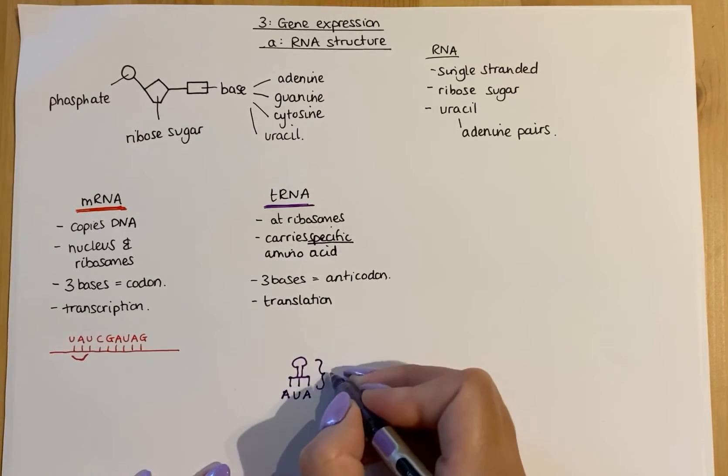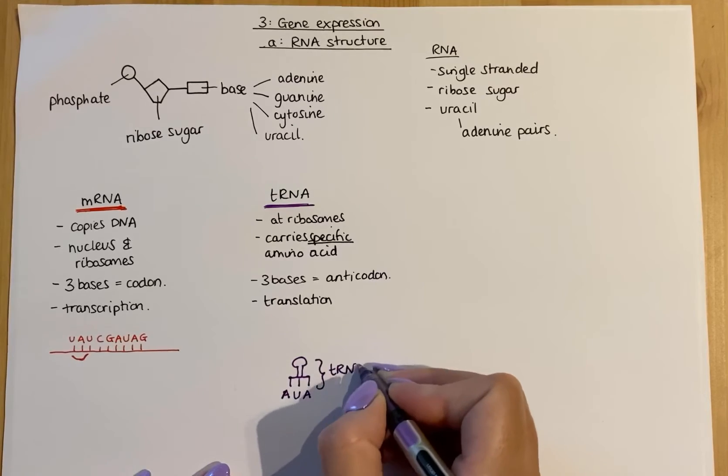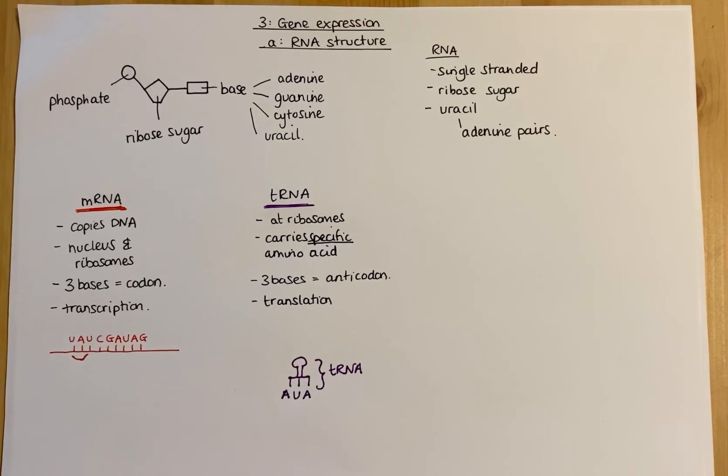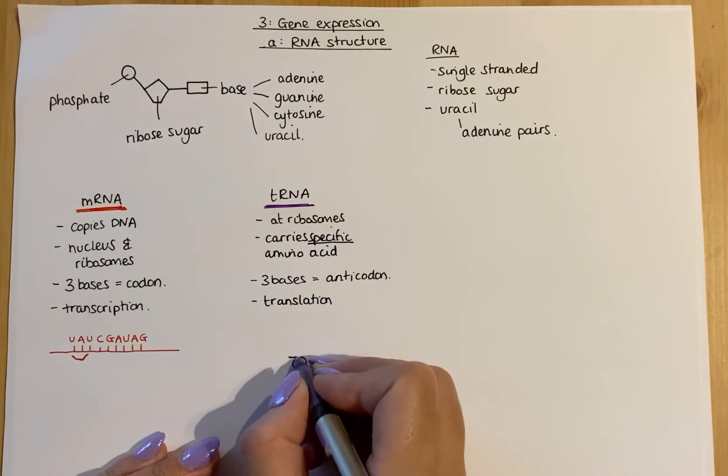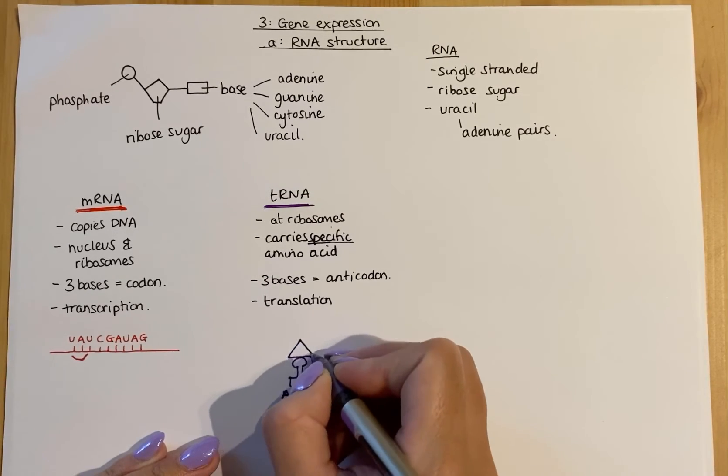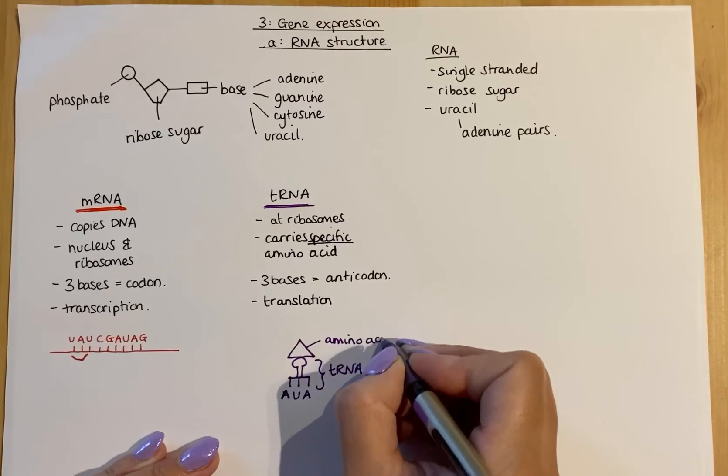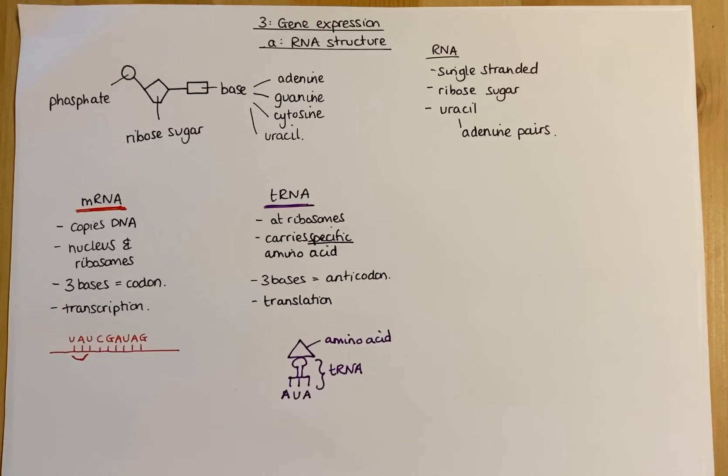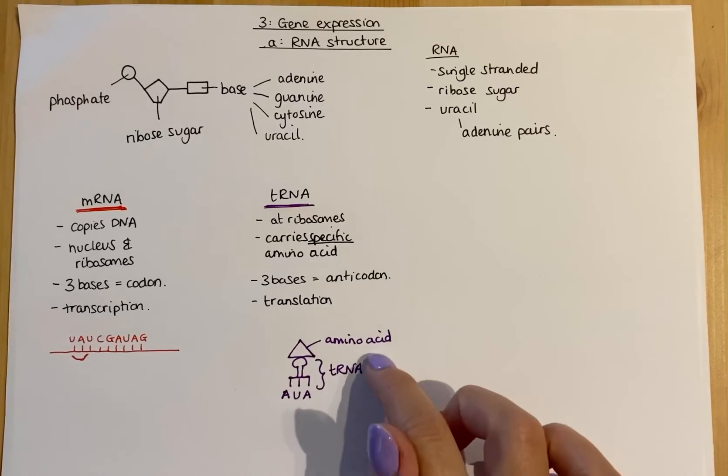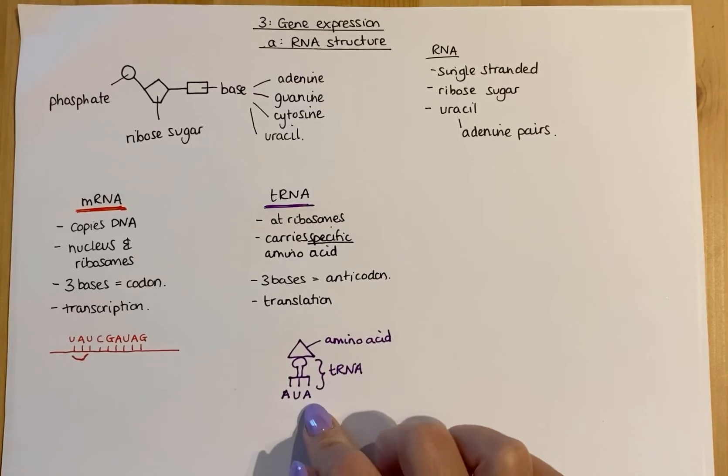This whole molecule here is a tRNA molecule. On top of that, they would often carry an amino acid. Just to show a quick demonstration, that would be an amino acid on top. The tRNA have a specific attachment site for that amino acid and will also have three bases as an anti-codon.